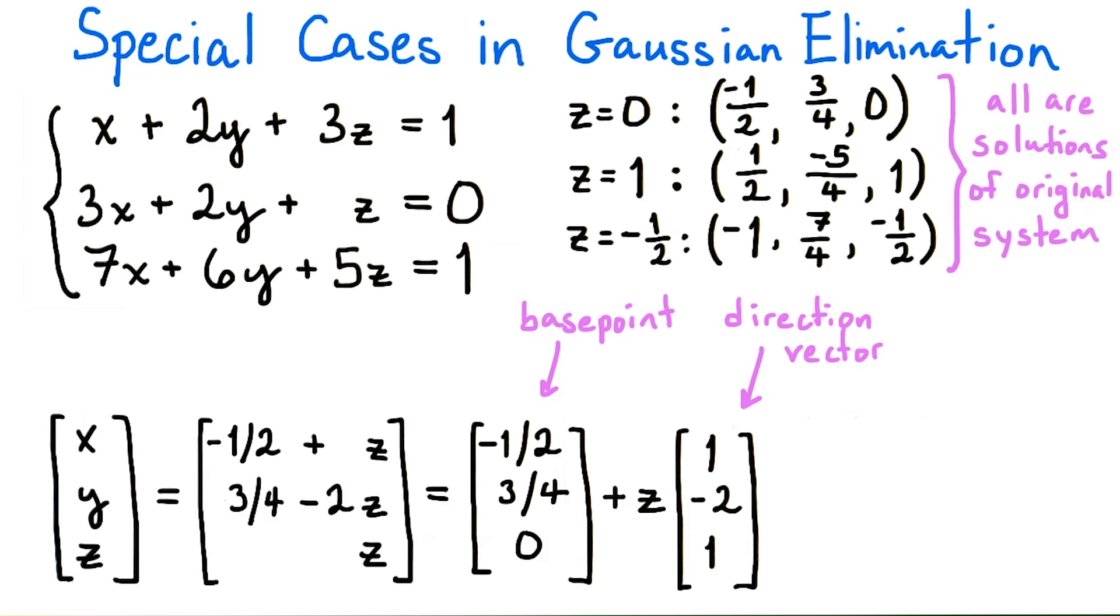Here are some different points that are in the solution set that we can generate by picking different values of z. Picking z equals 0 gives us the base point. Regardless of the value of z that is picked, we can check that the point will be a solution to the original system of equations.